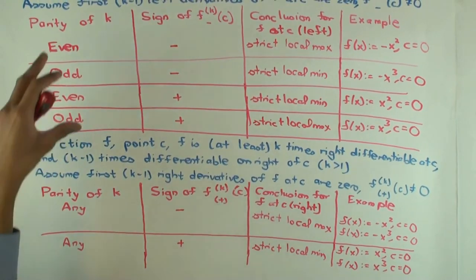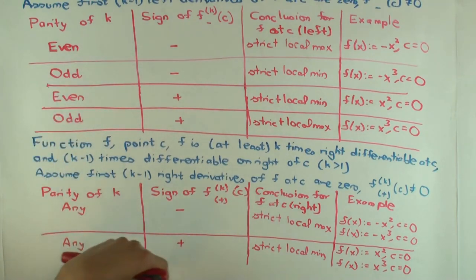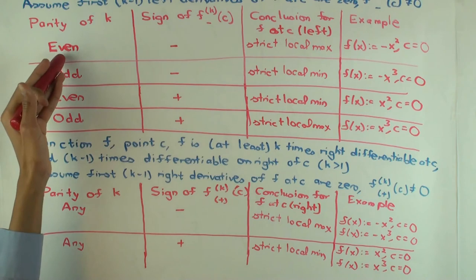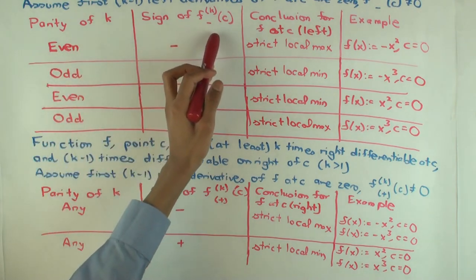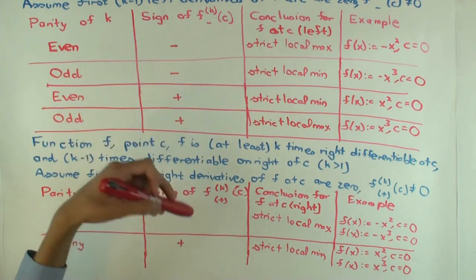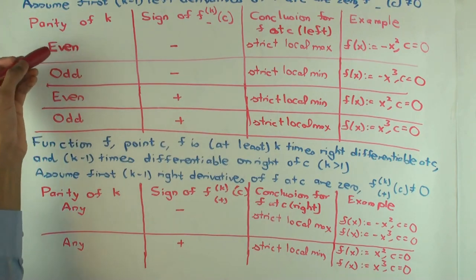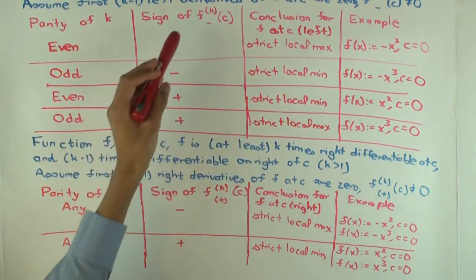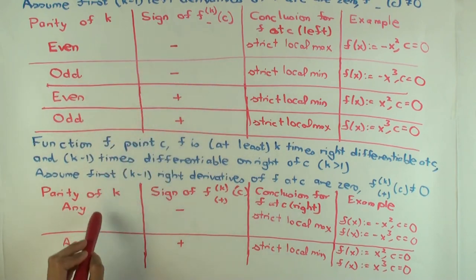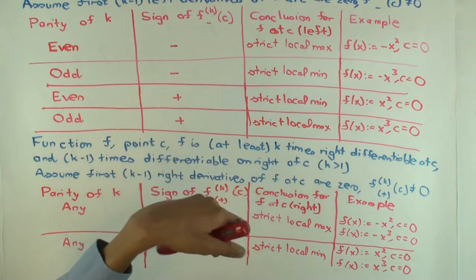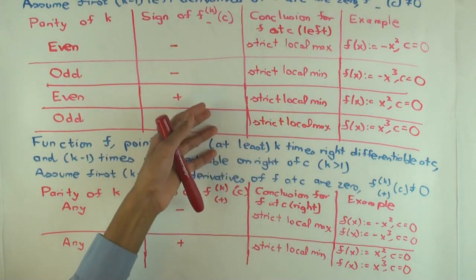So now once you have both of these one-sided versions, left and right, you can actually try to start combining. We won't do that in full detail, but now you can see that if the kth derivative two-sided exists and is negative, that means you have a negative here and here, and then depending on whether k is even or odd, you can get even negative, even negative, max from both sides, so max. If it's odd, then you have odd negative, so min and max, so neither. And so by doing the various combinations, you can get the various cases for the usual higher derivative test.